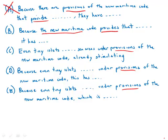Now in C, D, and E, we have this phrase under the provisions of the new maritime code. And in all three cases, it's right against the word sea area. So we have large sea areas under the provision of the new maritime code.